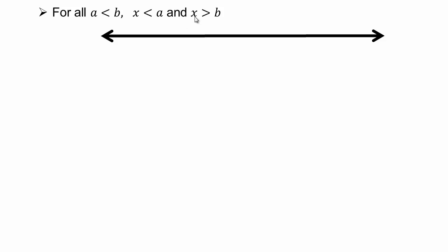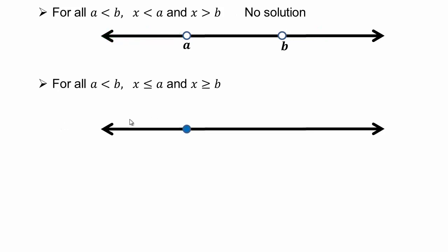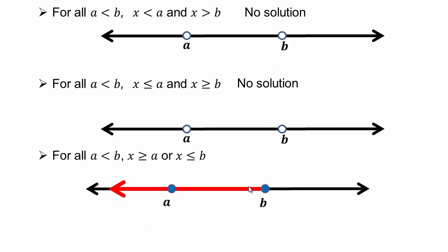For x smaller than a and x bigger than b: if you're smaller than a, you're automatically smaller than b too, so you can never be bigger than b at the same time. This results in no solution. For x less than or equal to b or x greater than or equal to a: the whole number line is covered because you can be above a or below b, which means you can be anywhere. That represents all real numbers, written as negative infinity to infinity with round brackets.